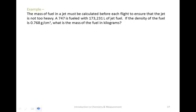So, here's an example of using that. The mass of fuel in a jet must be calculated for weight measures. If a 747 has 173,231 liters of jet fuel, they want to know how much mass that volume of fuel is using. To do that, we can convert mass to volume or volume to mass using the density, which is listed here, as a conversion factor. Think about 0.768 grams per centimeters cubed. That means if you have 0.768 grams of jet fuel, you have 1 centimeter cubed of jet fuel.